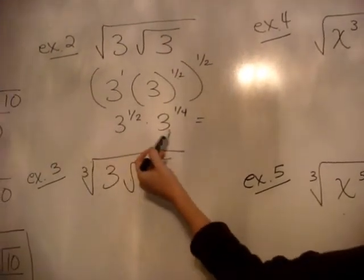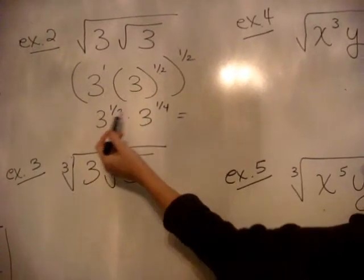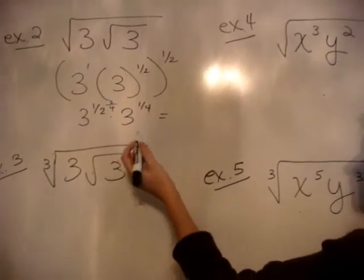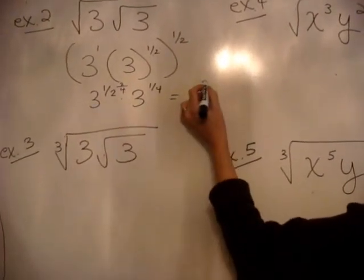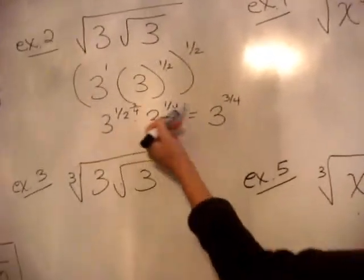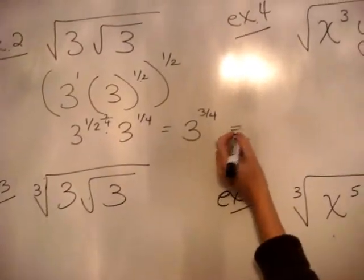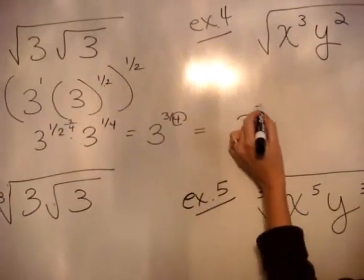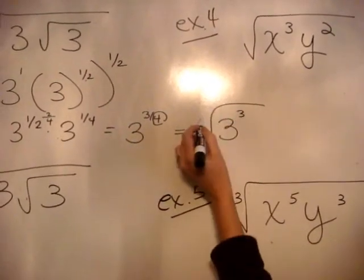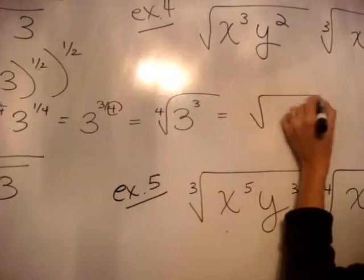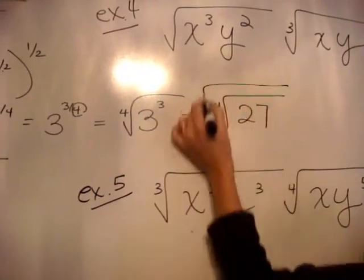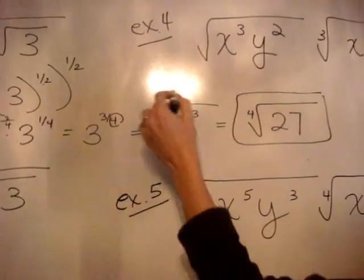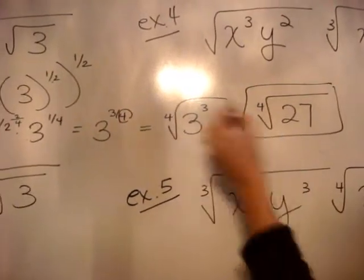Now the bases are the same. If the bases are the same we're going to add the exponents. So I'm going to make the denominators the same — one-half becomes two-fourths — so the answer is three to the three-fourths. The bases are the same, we added the exponents, so we get three to the three-fourths power. Remember the denominator is the index and the numerator is the power. So we can write it as the fourth root of three to the third, which simplifies into the fourth root of 27. That's your final answer. The power can go inside or outside the radical, but it simplifies easier on the inside.